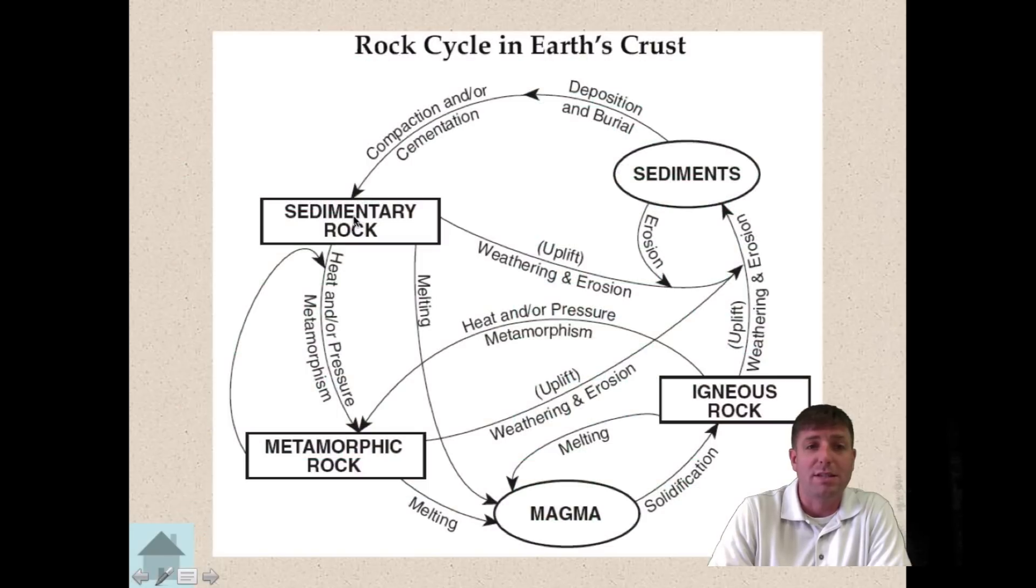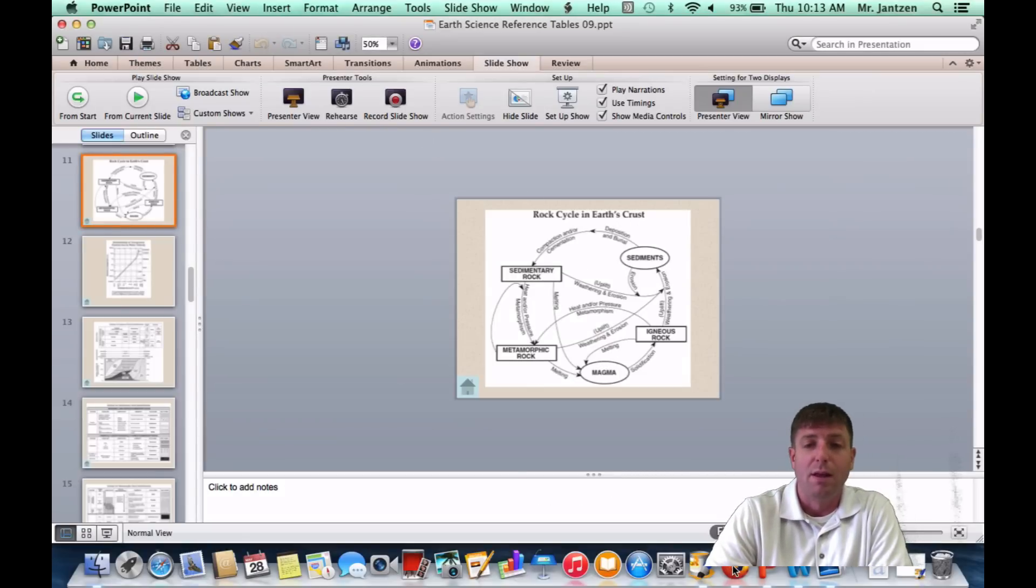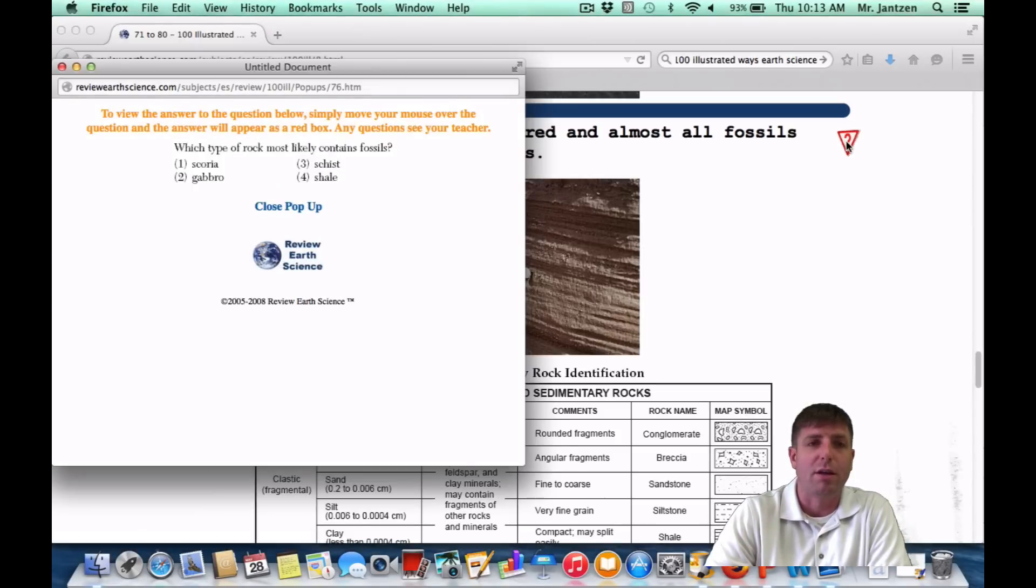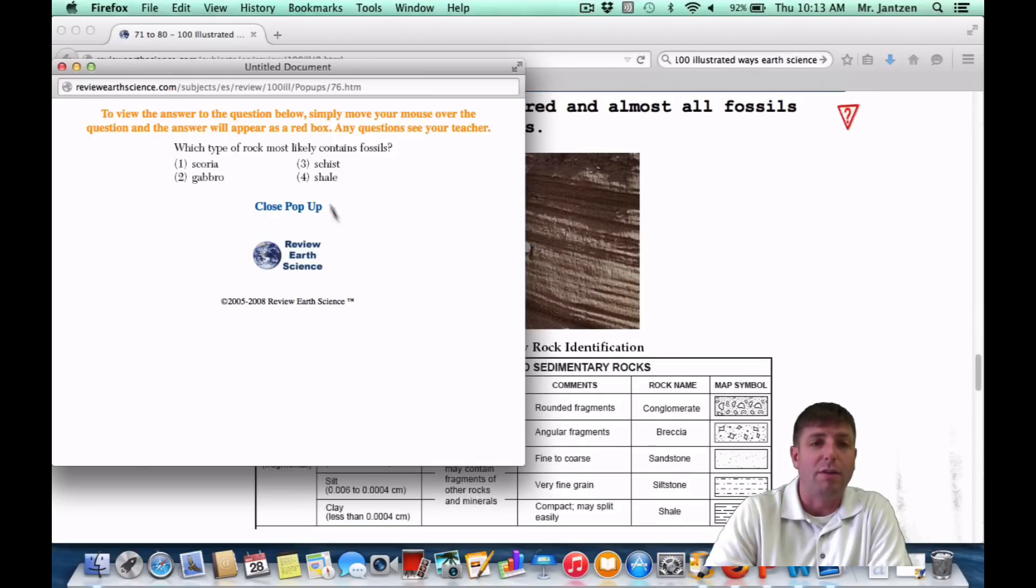If you go to your rock cycle chart, this is telling you how sedimentary rocks form. Actually, this tells you how all your rocks form. Compaction, cementation, deposition, and burial all lead to the formation of a sedimentary rock. These processes lead to the formation of a metamorphic rock. These processes lead to the formation of an igneous rock. So all these processes are going to lead to the formation of different rocks, and they're all interrelated. That's the whole point of the rock cycle chart. As a Regents question, sedimentary rocks, which type of rock most likely contains fossils? You just come to your reference tables and you see which one is made up of clastic sediments. You have a list of them right here. And you're going to see that it's going to be shale, because shale is right down here in your reference tables.